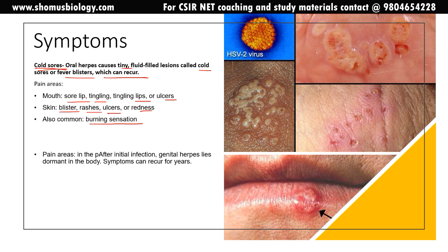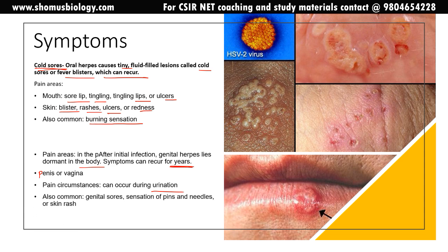For genital herpes, after the initial infection the virus lies dormant and symptoms can recur for years because it is incurable. It causes problems in the penis and vagina, immense pain and burning sensation during urination, a pins-and-needles sensation in the genital area, and visible skin rashes.